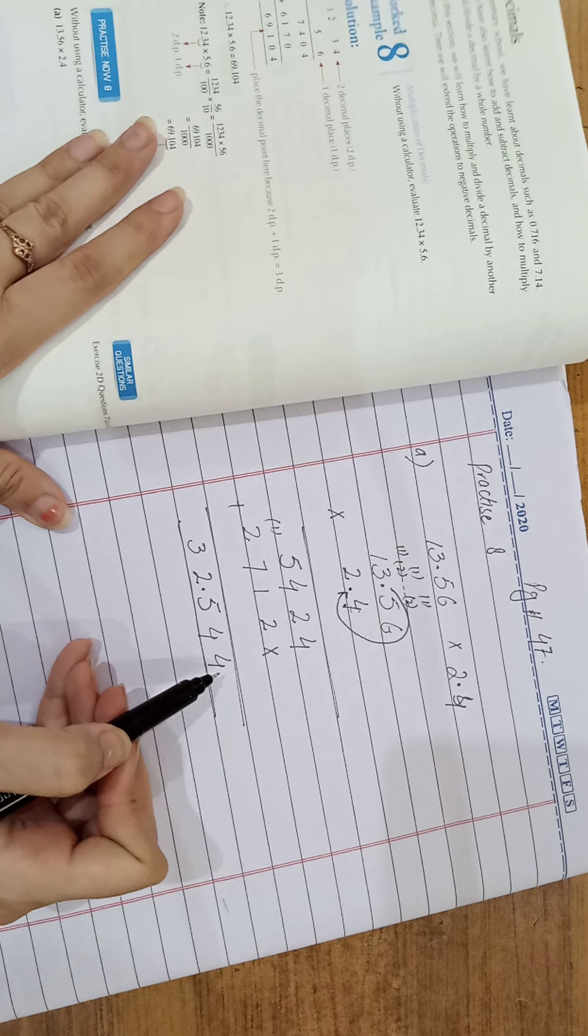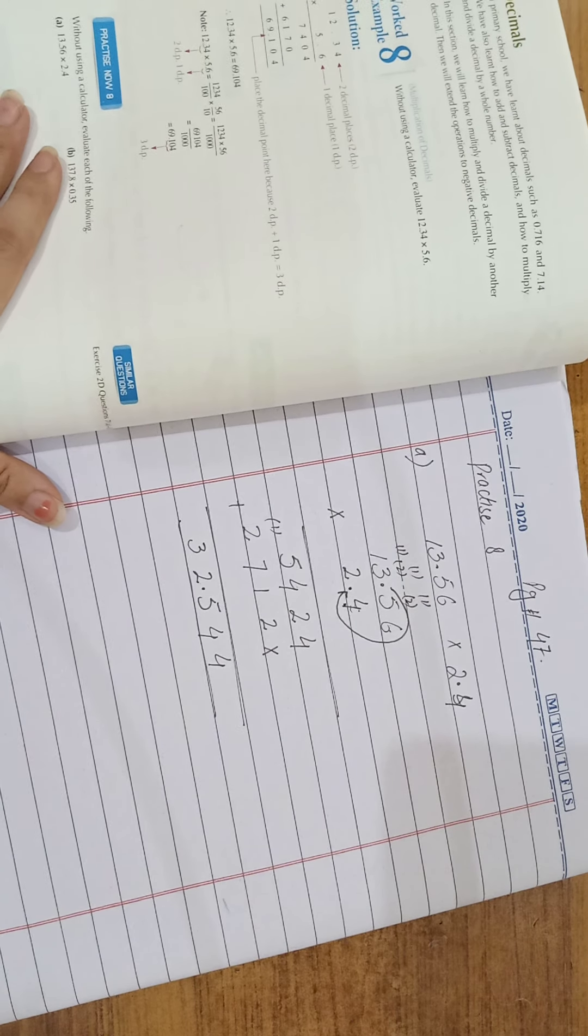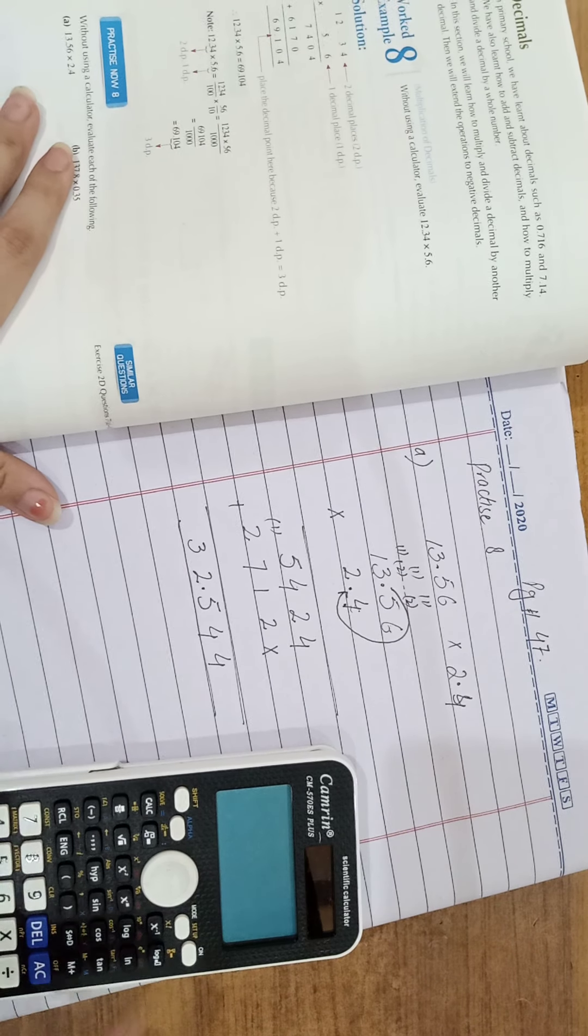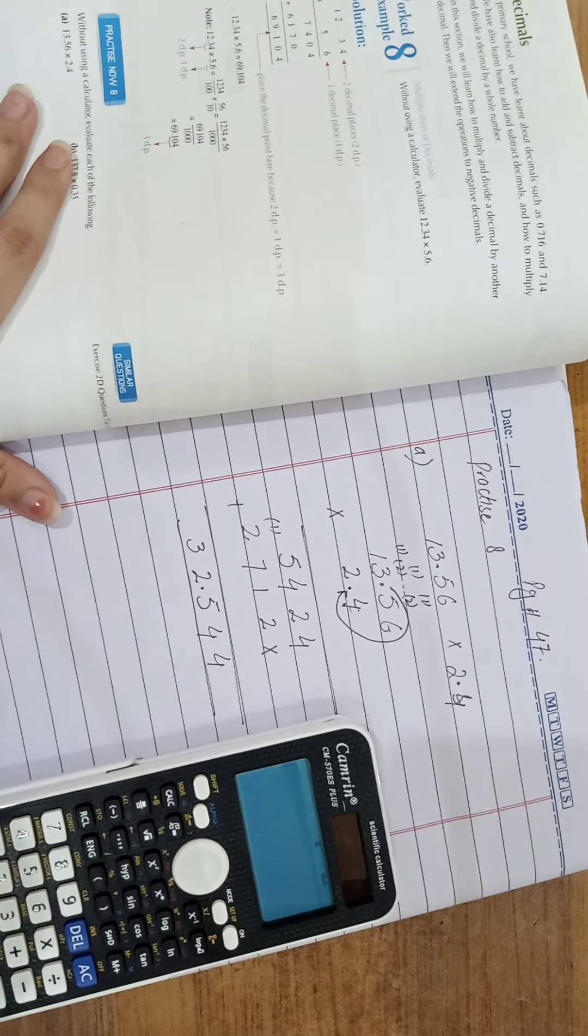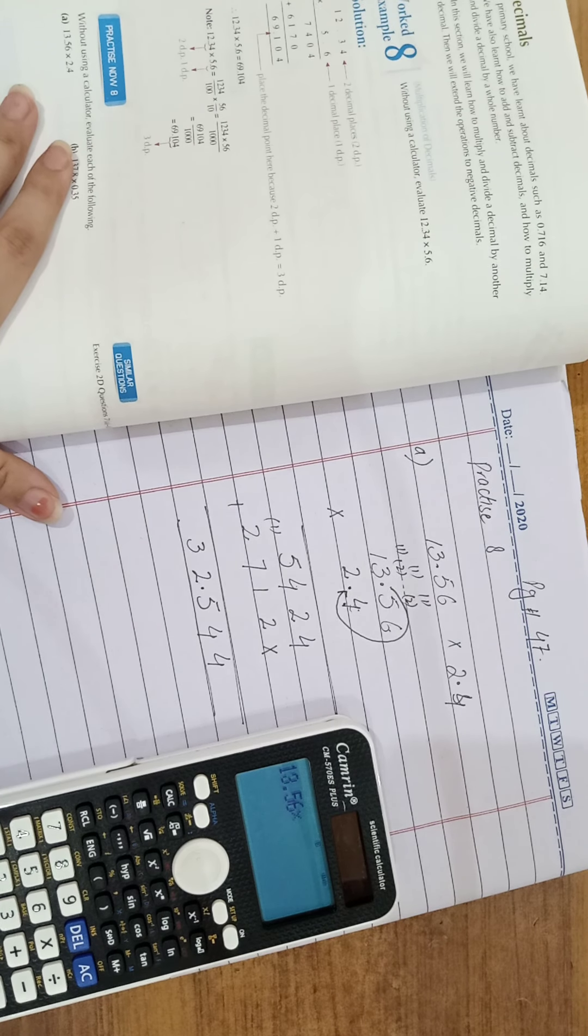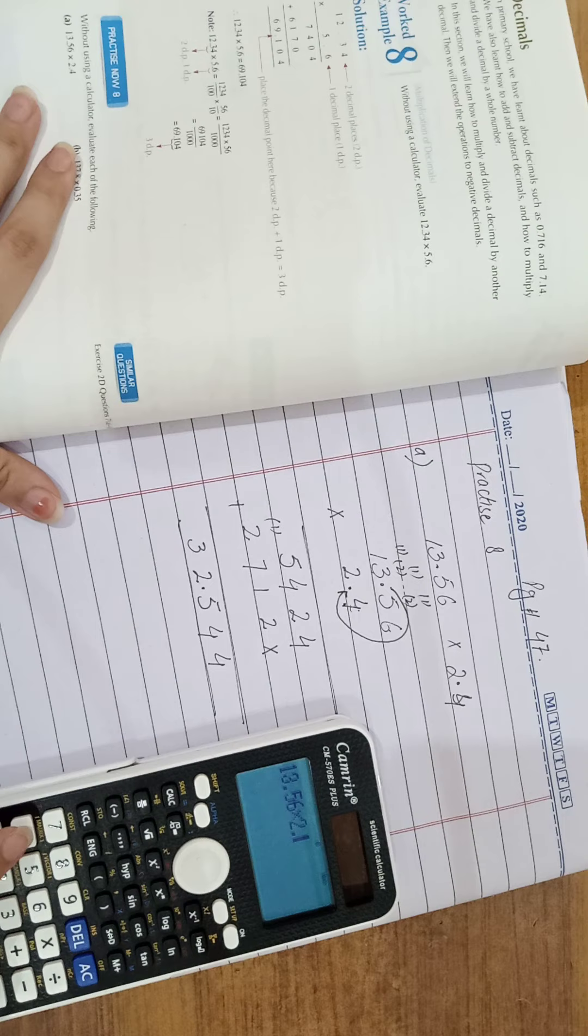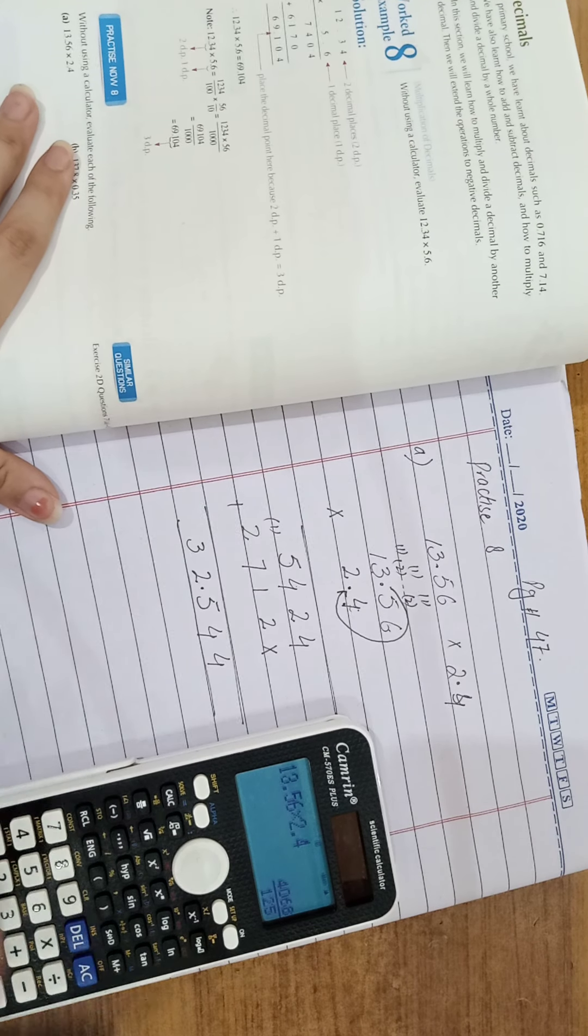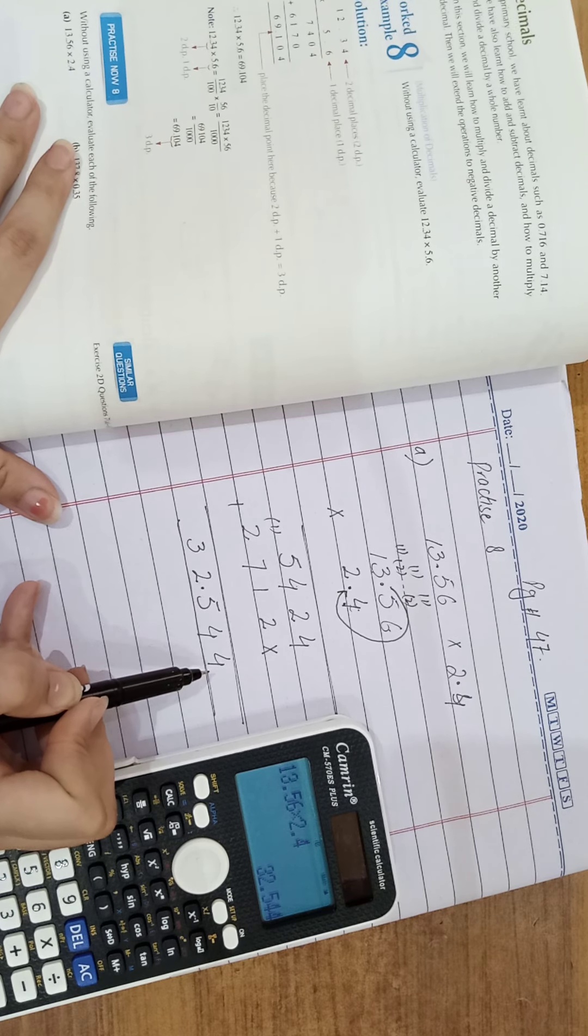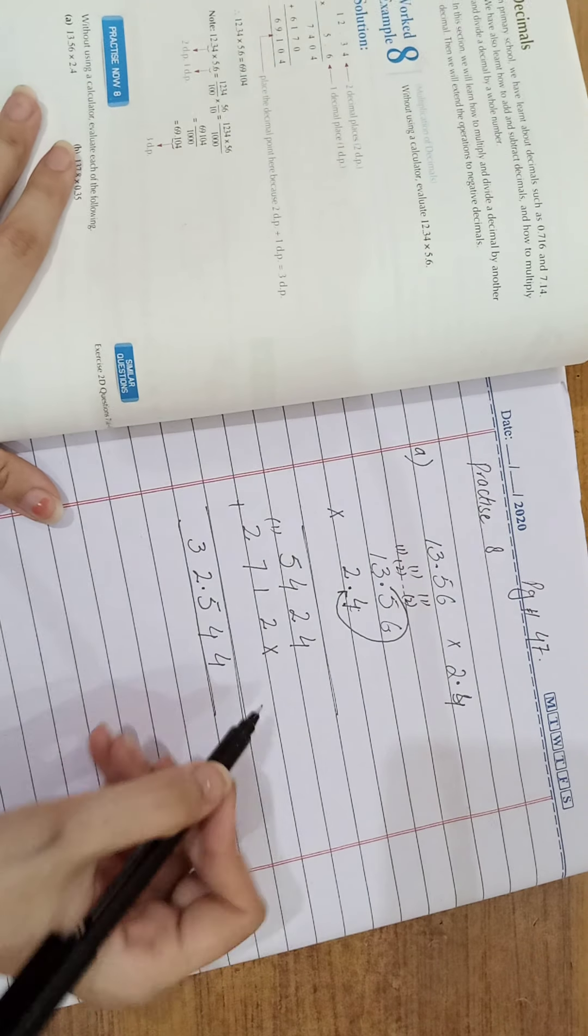Students, you can check it on your calculator. Because next question will be that. Just check the calculator. Check on calculator: 13.56 multiplied by 2.4, 32.544. This is your answer. Clear, students?